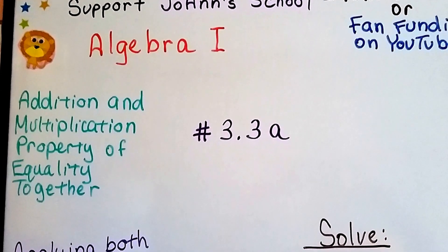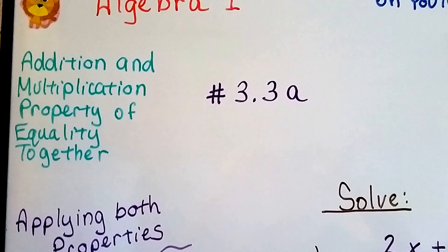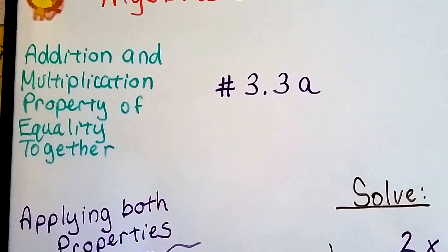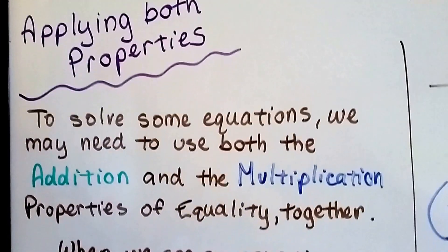Algebra 1 number 3.3a. In this unit we're going to talk about addition and multiplication property of equality being used together. We're going to be applying both properties to solve an equation.